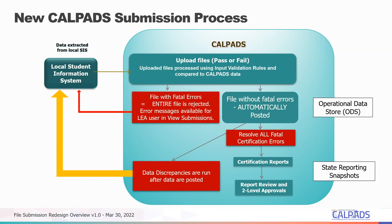Here is another sample of the workflow showing the pass or fail decision point. If one record fails, the whole file is rejected and you go back to fix it. If the file comes in with no errors it automatically posts. Then data discrepancies run and show errors or data that needs fixing — you go back to the SIS, send it through again. Data discrepancies is a post-posting process and you will want to go back to your SIS to fix data.